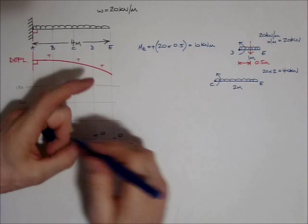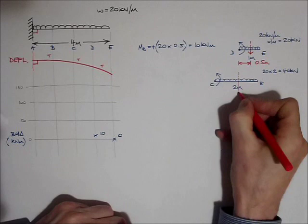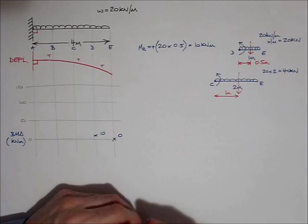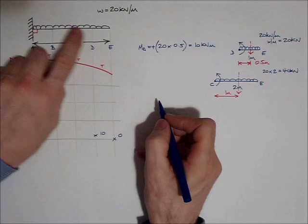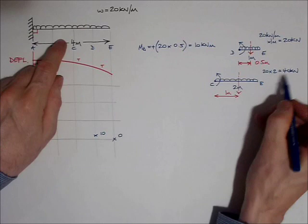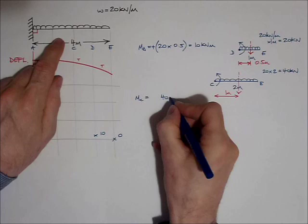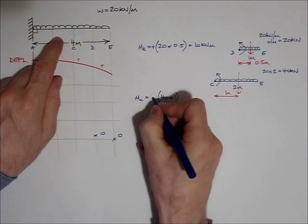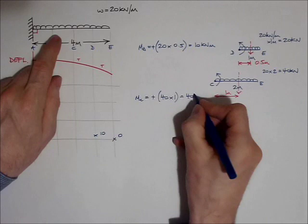That 40 kilonewtons is acting at its centre, which I calculate to be 1 metre away from point C. So when I calculate the bending moment at point C, at this point here, I'm looking to the right, and I've got 40 kilonewtons. So MC equals 40 kilonewtons times its distance, 1 metre. It's acting at a distance of 1 metre from point C, and it's going clockwise around point C. So the whole thing adds up to 40 kilonewton metres.